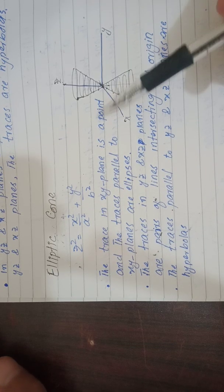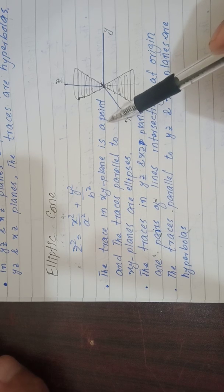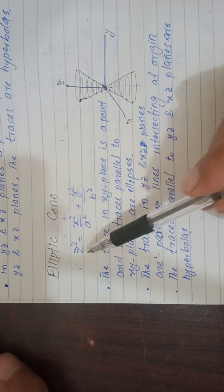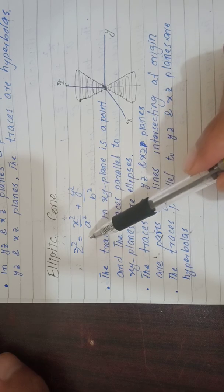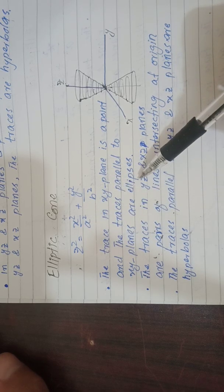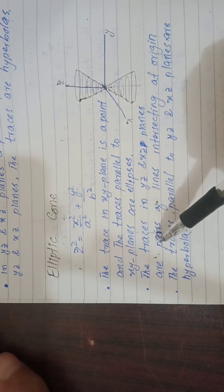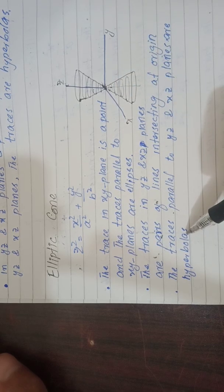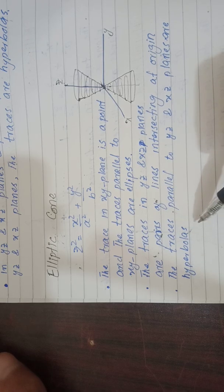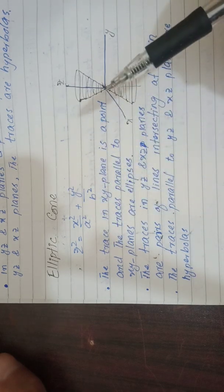Next is the elliptic cone. Its equation is z² = x²/a² + y²/b². The trace in the xy plane is a point — setting z = 0 gives a single point. Traces in planes parallel to the xy plane are ellipses — setting z = constant gives ellipses. The traces in the yz and xz planes are pairs of lines intersecting at the origin. Traces parallel to the yz and xz planes are hyperbolas.